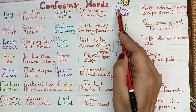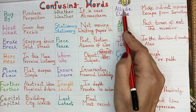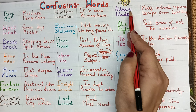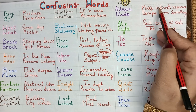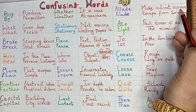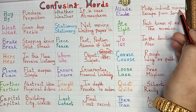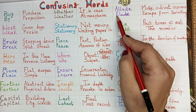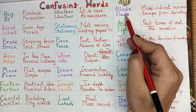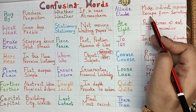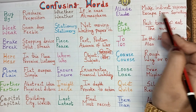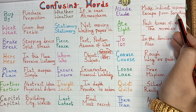A-L-L-U-D-E — allude means make indirect reference. E-L-U-D-E — elude means escape from something.